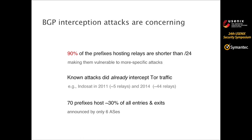BGP interception attacks are concerning. 90% of the prefixes hosting relays are shorter than /24, meaning they are vulnerable to such more-specific prefix attacks. Known attacks have already intercepted Tor traffic — for example, in the ISOC 2014 attack, 44 relays were affected. 70 prefixes host about 30% of all entry and exit relays, and they are announced by only six ASes. So if any of those six ASes is hijacked, a large number of Tor relays could be potentially affected.